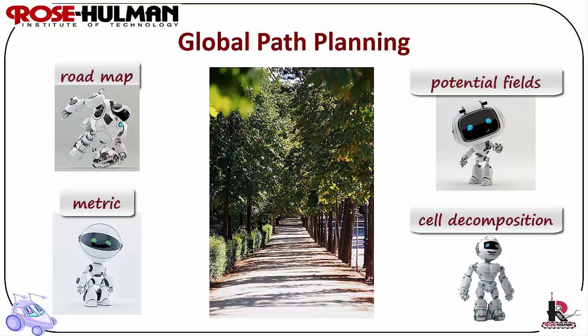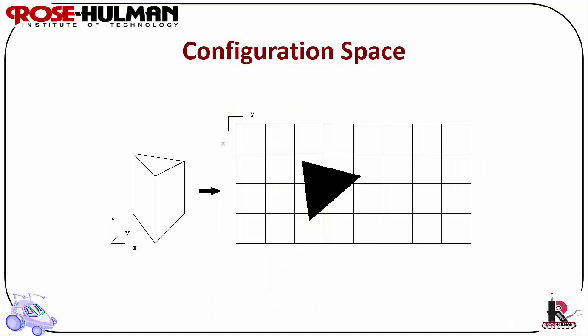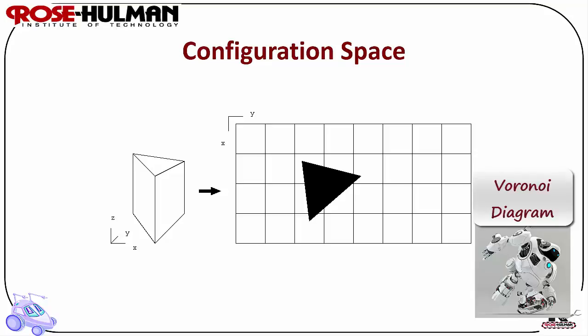Representation stores the world as salient features or navigationally relevant objects, and this is called the configuration space. A configuration space or C-space transforms three-dimensional space to two-dimensional space suitable for robots — that is a simplifying assumption. It is more amenable for storage in a computer and for rapid execution of algorithms. In this class we also use matrices a lot to store maps. There are several types of C-space representations including Voronoi diagrams, regular grids, quad trees or octrees, vertex graphs, and hybrid free space.